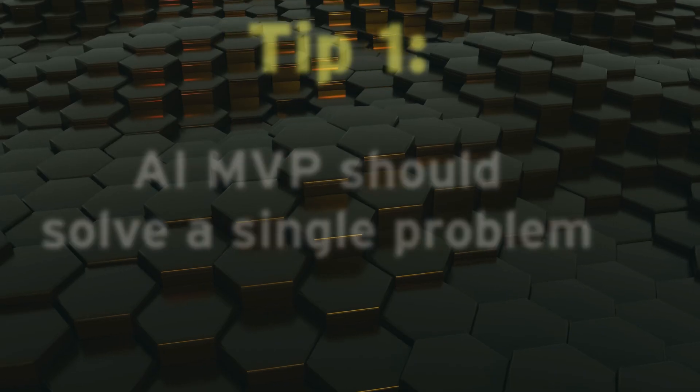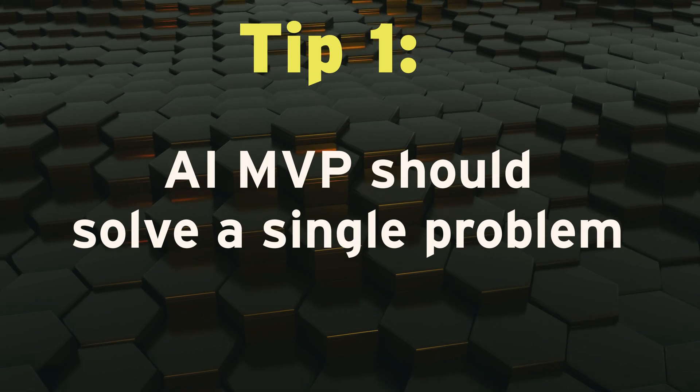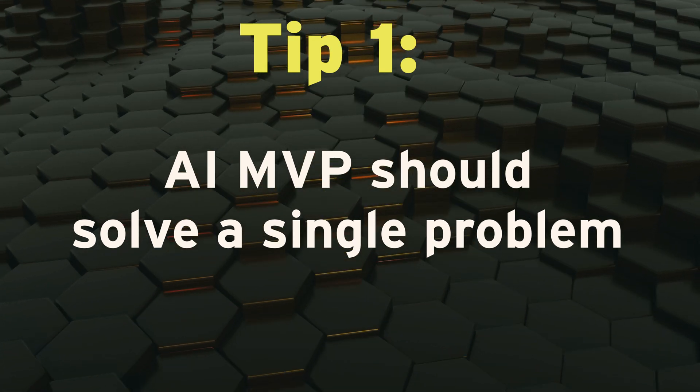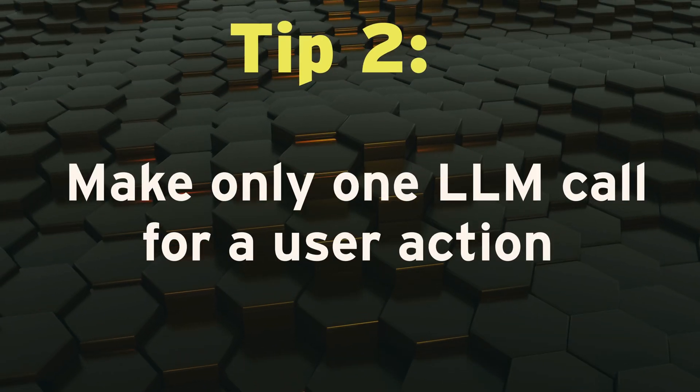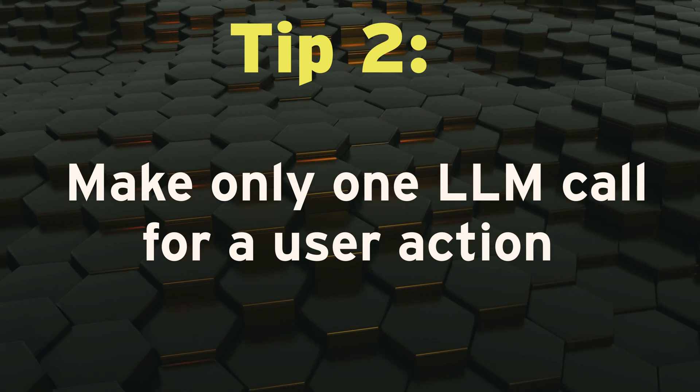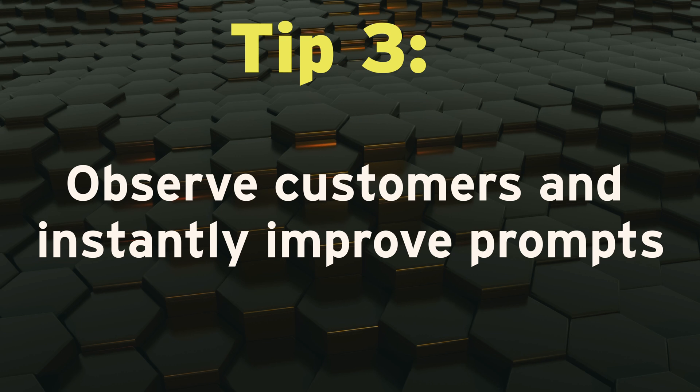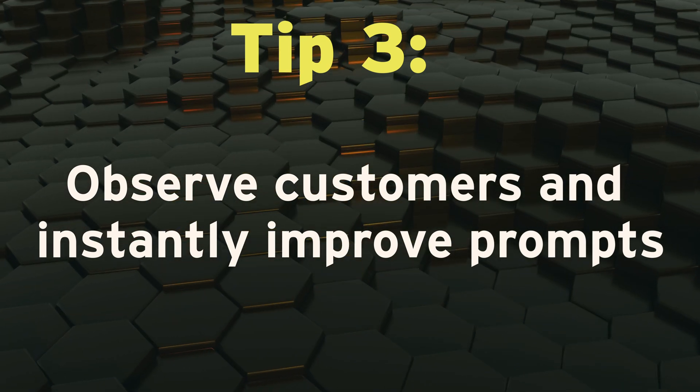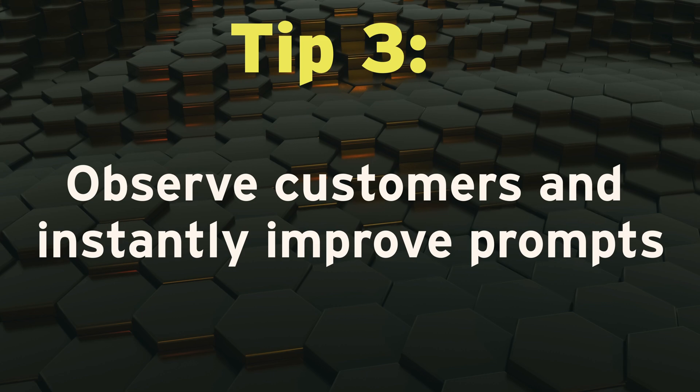Here are some guidelines. First, begin with a single problem or step in a workflow. For example, instead of classifying, summarizing, and extracting named entities from contracts, release an MVP that only does classification. Second, release an MVP that makes a single LLM call for every user action. This will make your system faster and help you rapidly improve. Finally, closely observe your customers using your MVP so you can instantly improve prompts in seconds.